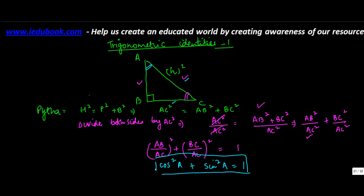So this is your first identity. And what will this mean? That whatever be the value of A—let's say you have A = 45°, you have A = 60°—in all these cases, whatever be the value of A, the sum of cos² A + sin² A is always going to be 1. So this is your first trigonometric identity.